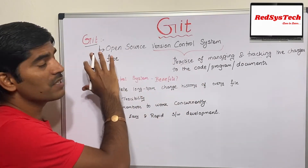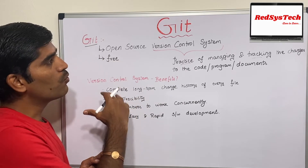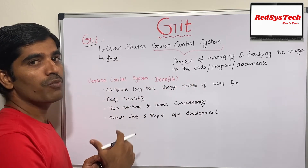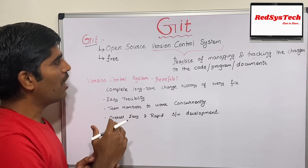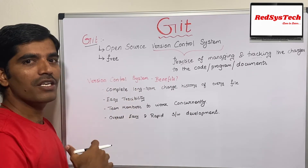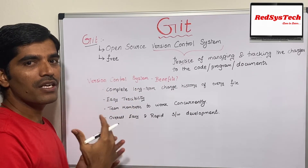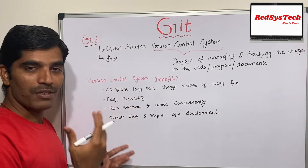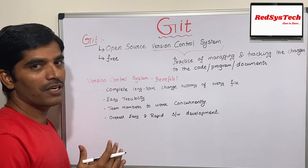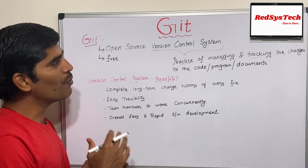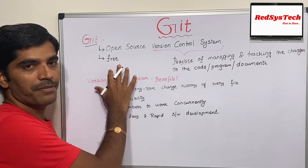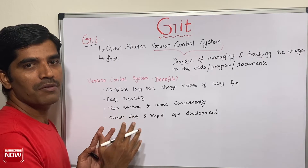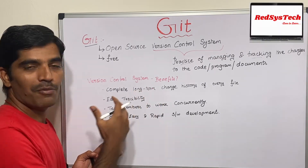Git is a tool which we can use for managing and tracking the changes we make in our code for long-term support, and it is free. You can use Git without paying anything. If you are using it at an enterprise level in your project there will be an enterprise account, but if you want to start learning, it is always free.